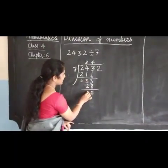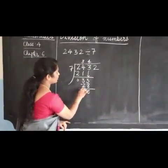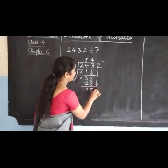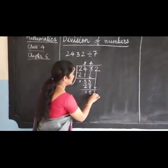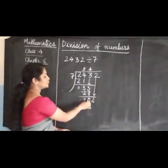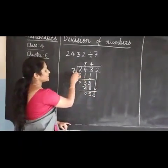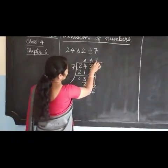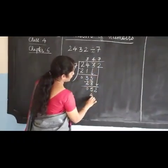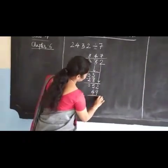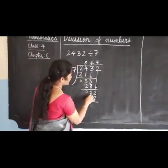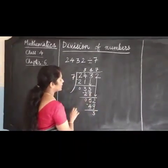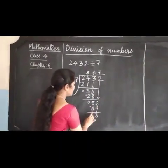We can either write 0 or put a cross here. Now bring down the next number. The number has become 52. How many 7s are there in 52? 7 sevens are 49. 12 minus 9 is 3. 4 minus 4 is 0.